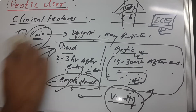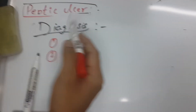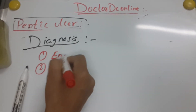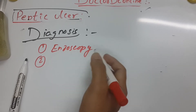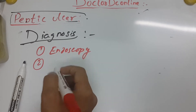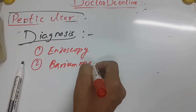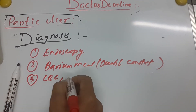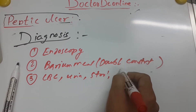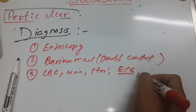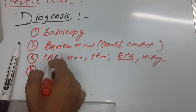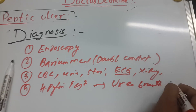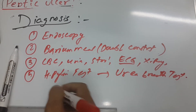Now let's talk about diagnosis. First, we diagnose according to clinical features. For investigations: the most specific is endoscopy — from endoscopy we can see exactly the mucosal layers. Another is barium meal using the double contrast technique. We also do CBC, urine test, and stool test. ECG to exclude MI or angina pectoris, X-ray to exclude other conditions. Most importantly, the H. pylori test — specifically the urea breath test.